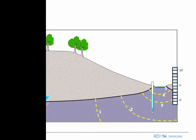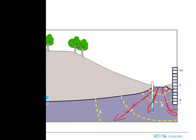Now in a different scenario we have a losing stream — in the previous example that was a gaining stream. Here's a losing stream, and the stream is at higher head. It's at a head of five, which is higher than the heads out in the aquifer. In this case we would infer that the flow direction looks something like this — there would be a flow path that always crosses these head contours perpendicular to the contours. So there's the flow leaving a losing stream.